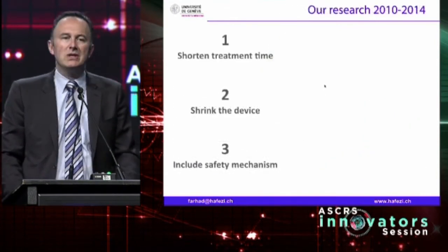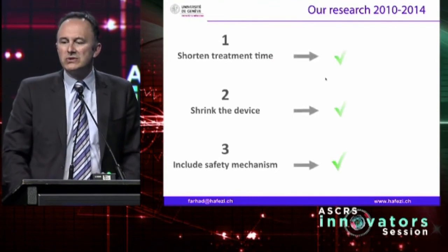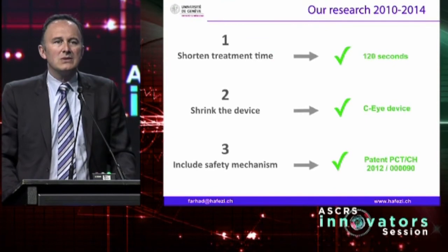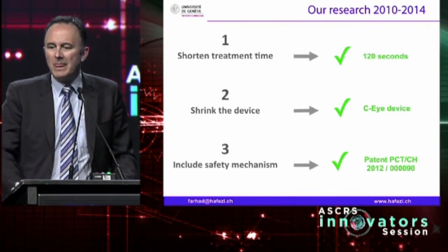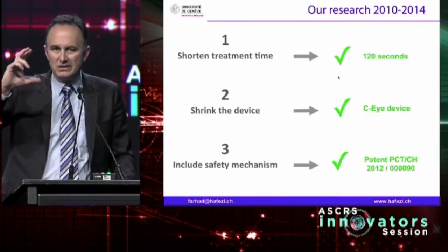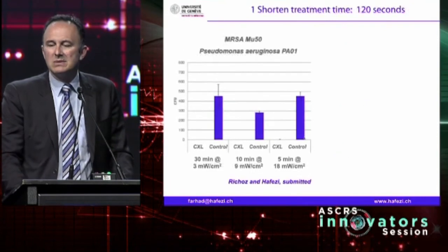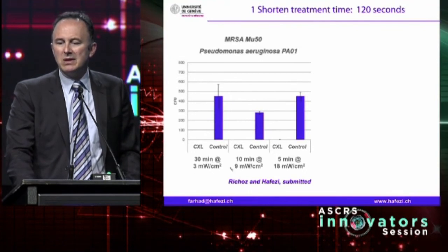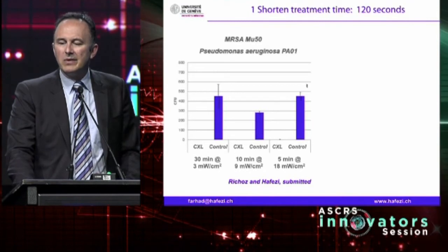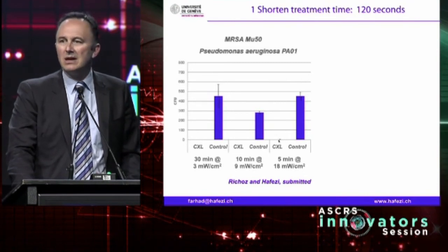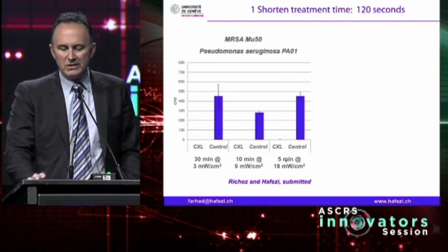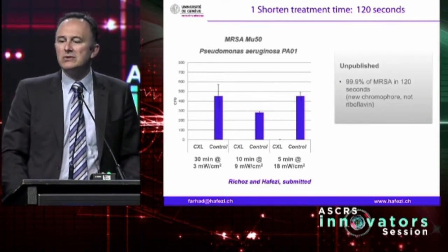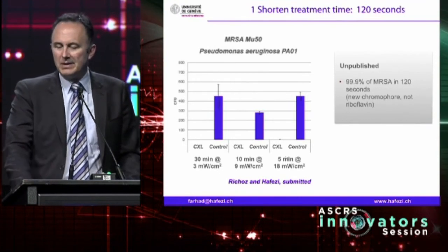Our research group in Geneva has been focusing on three aspects in the past four years: shorten the treatment time, develop a small device, and implement security mechanisms. We are now at 120 seconds to kill bacteria and fungi efficiently. We are working in a university spin-off company on a small device. Looking at three different regimens — 3 milliwatts for 30 minutes, 9 milliwatts for 10 minutes, 18 milliwatts for 5 minutes — we can kill 99.9% of MRSA in five minutes with riboflavin, and with a new chromophore we achieve the same in 120 seconds in vitro.